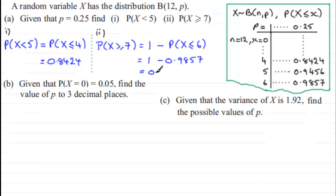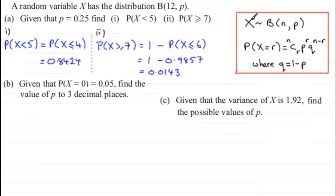In part B, we're given that the probability X equals 0 is 0.05, and we've got to find the value of P to three decimal places. This relies on being familiar with working out probabilities from a binomial distribution. We should know that if X is distributed binomially with parameters n and P, the probability X equals r is given by nCr times P to the power r times q to the power n minus r.